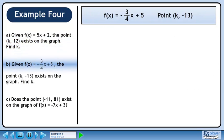In part b, we are given f(x) = -3/4x + 5 and the point (k, -13) exists on the graph. Find k.